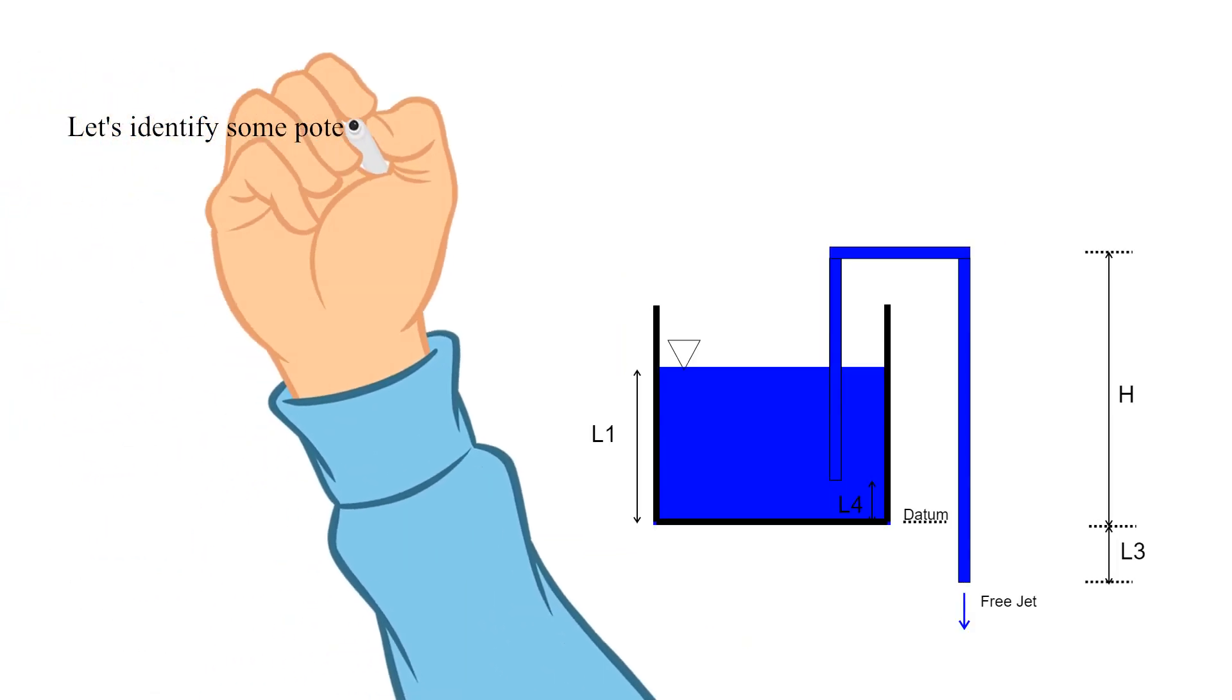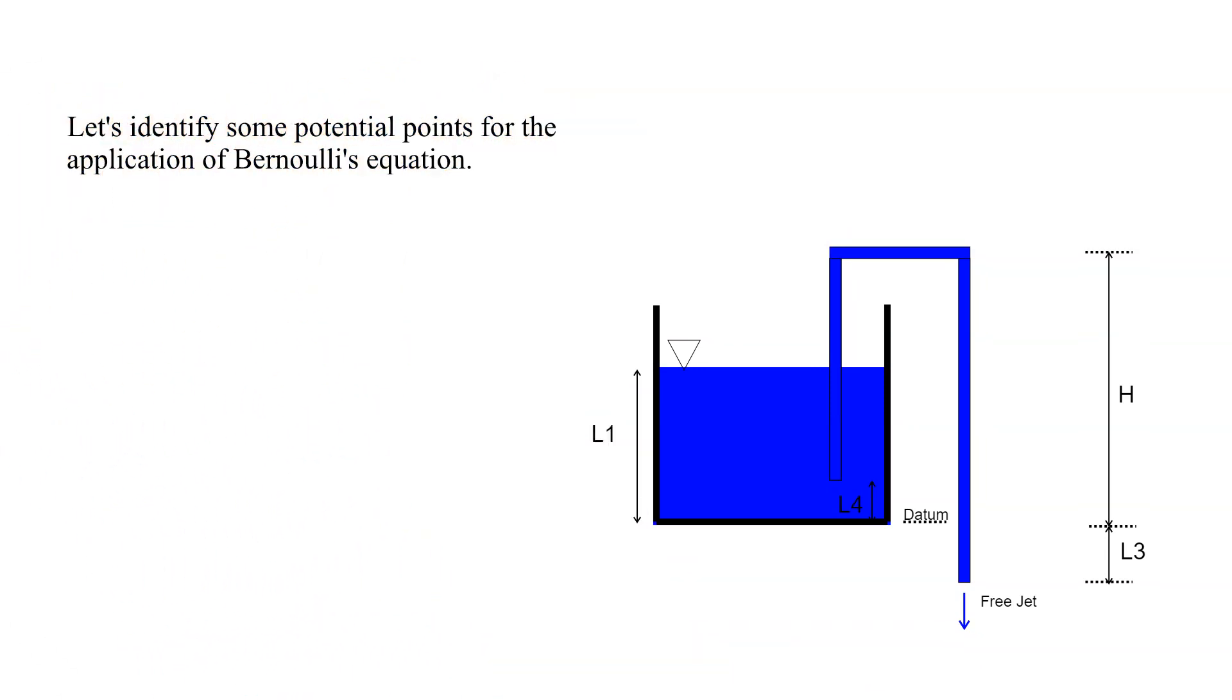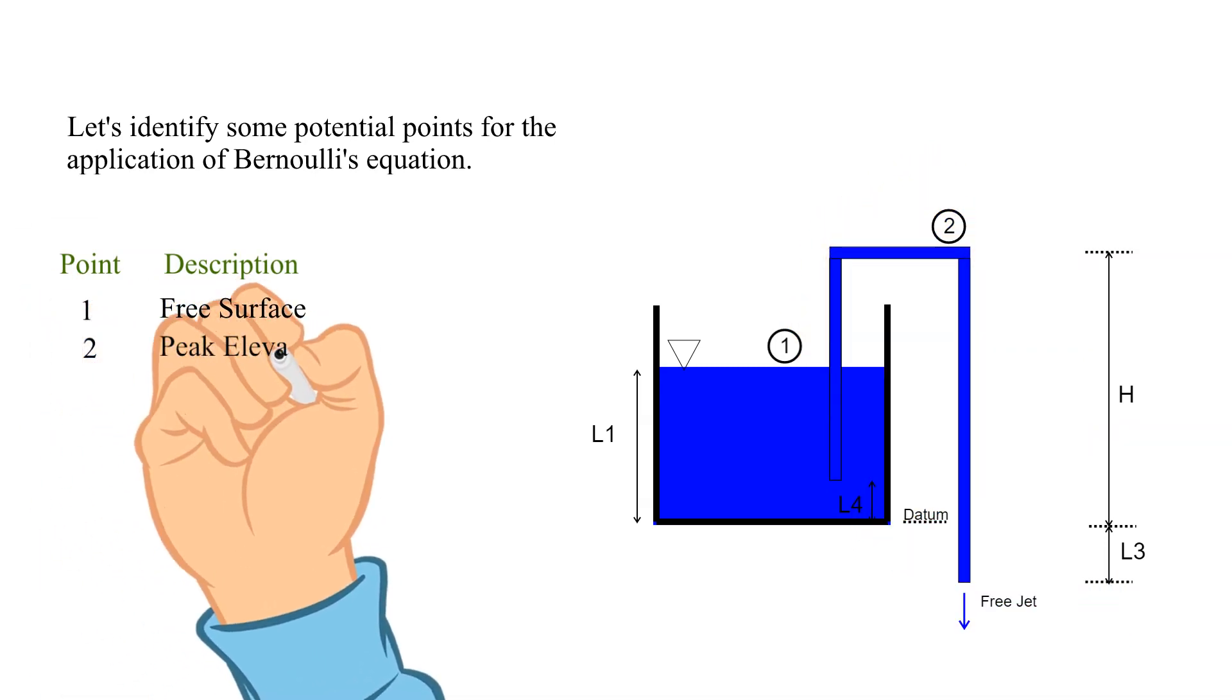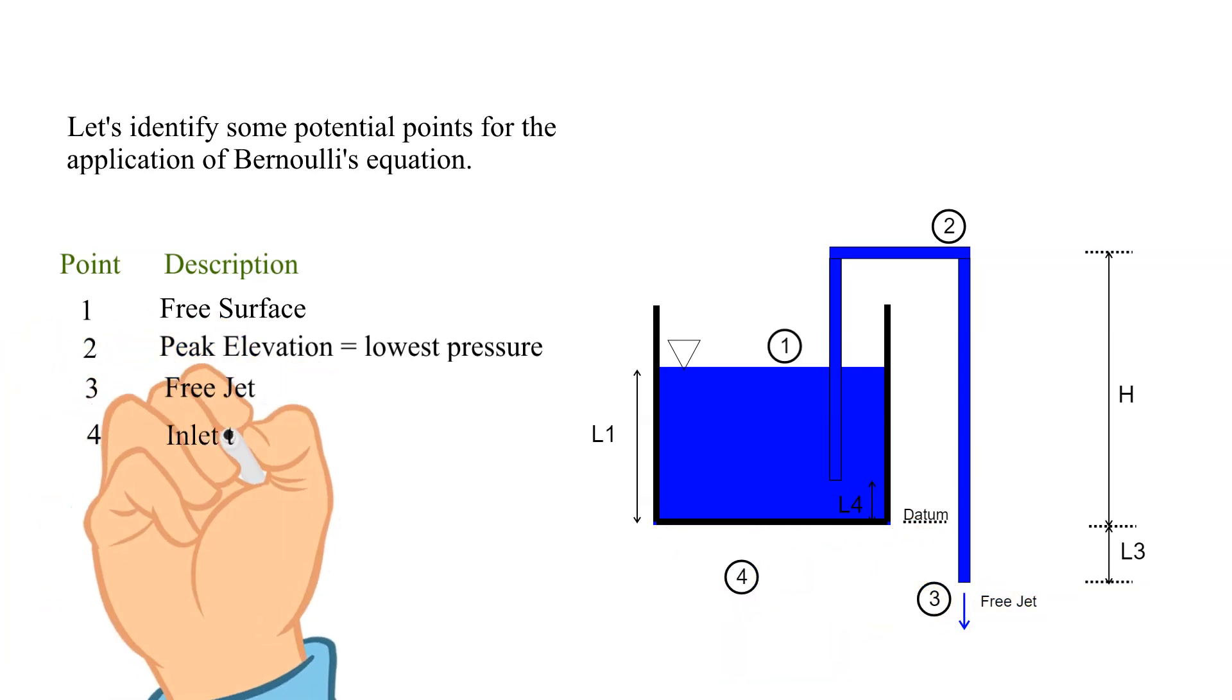Let's identify some potential points for the application of Bernoulli's equation. Recall, we are trying to find the maximum value of H for which the siphon will operate. Let point 1 be the free surface in the tank. Point 2 be the high point of the siphon pipe. We know that the point of highest elevation will be at the lowest pressure. This will be key in solving this problem. Point 3 is the free jet discharging to atmosphere from the siphon pipe. Point 4 is the inlet to the siphon pipe.